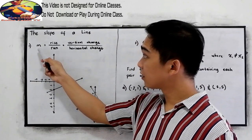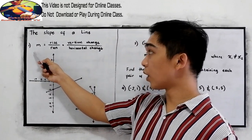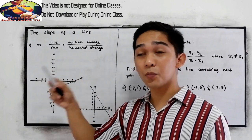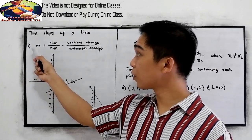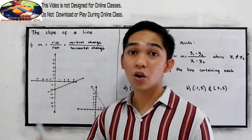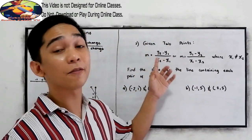So to further understand, let's have number one. We can find this slope using these two: number one, the rise over run, or using the formula given to us.